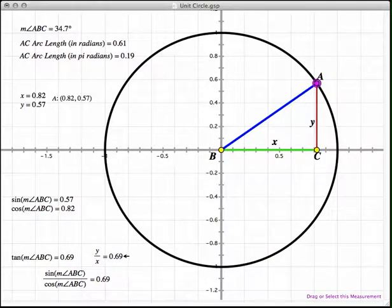And here, in this case, it's 0.69. So you can see the tangent equals 0.69, which is equal to Y over X as well.